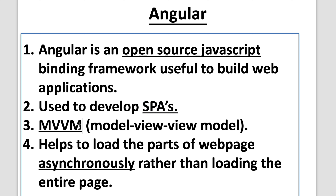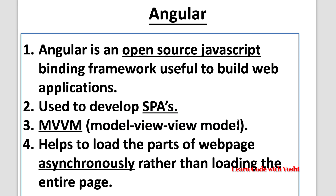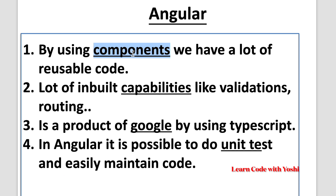Angular helps to implement the MVVM pattern — Model View ViewModel. It helps to load parts of the web page asynchronously, rather than loading the entire page at once. By generating components in Angular, we have a lot of reusable code. Angular also supports a lot of built-in capabilities like validation, routing, and other great features, so development becomes quicker and easier.